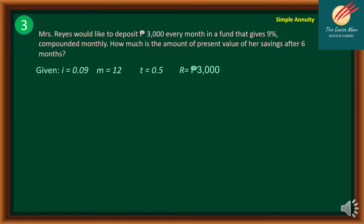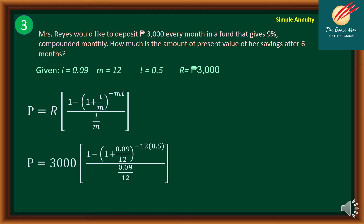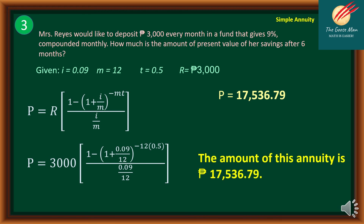Let's utilize the formula for problem number 3. Given: I = 9%, M = 12, T = 0.5, R = 3,000 pesos. Using the formula P = R × [1 − (1 + I/M)^(−MT)] / (I/M) and substituting the values, then computing with a calculator, we get P = 17,536.79. The present value of this annuity is P17,536.79.